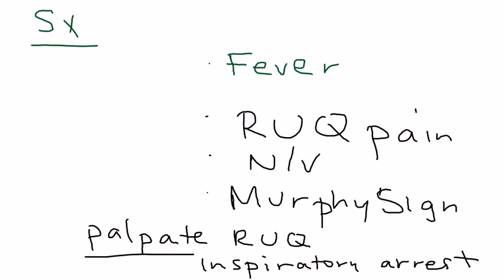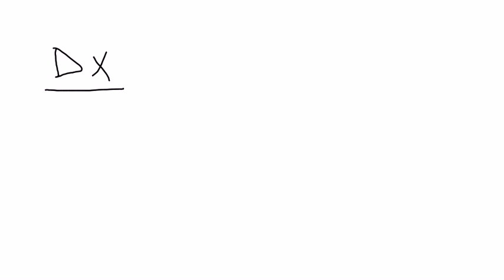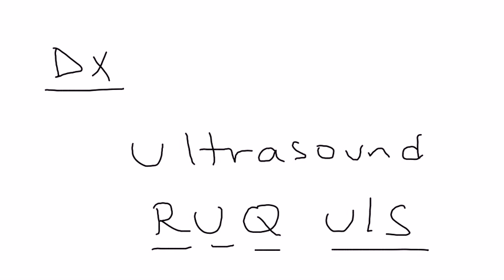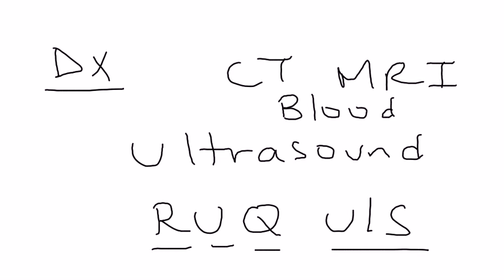If somebody comes in and you suspect pathology in their gallbladder, the diagnosis is almost always a right upper quadrant ultrasound because it's cheap and fast. Remember that CT and MRI are way too expensive for an initial test, and blood tests are not very specific in this condition.